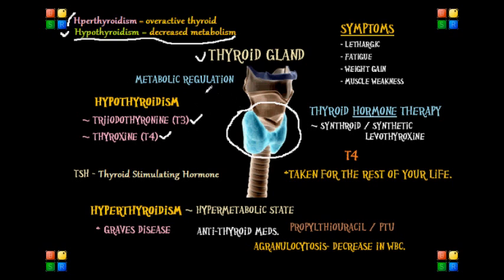With these facts in hand, we can understand how a hyperthyroid gland — which produces too much hormone — or a hypo, or under-functioning thyroid gland, causes a slow or lethargic metabolism.